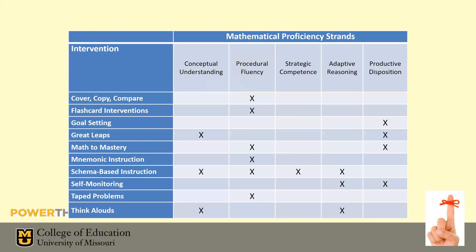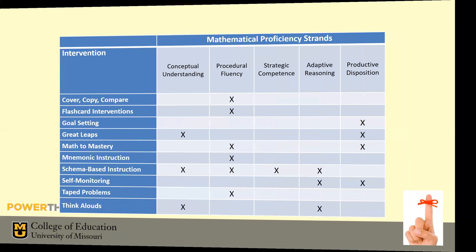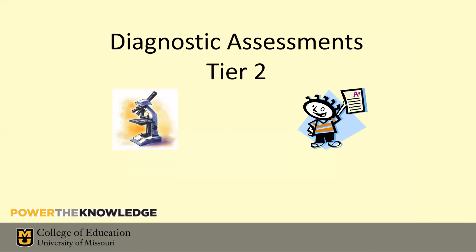Different areas of math proficiency require different interventions. We're still at tier two, so we're going to be heavily focused on procedural fluency. That's the skill most kids struggle with in math, and we're trying to help as many kids as we can. Tier three is when we try to do whatever we can for individual kids, where we really address conceptual understanding. But for now, we're still going to hit procedural fluency pretty hard.